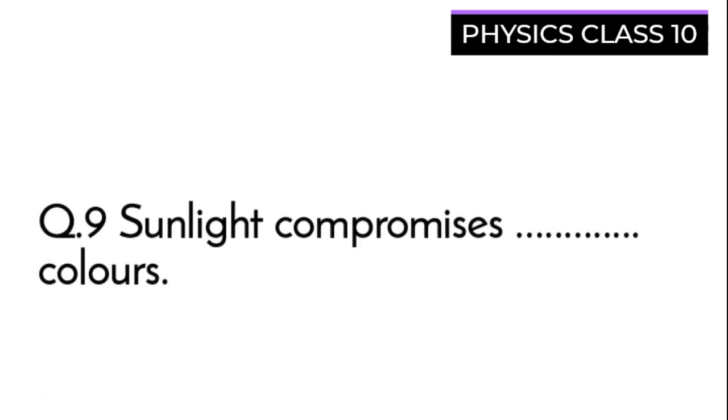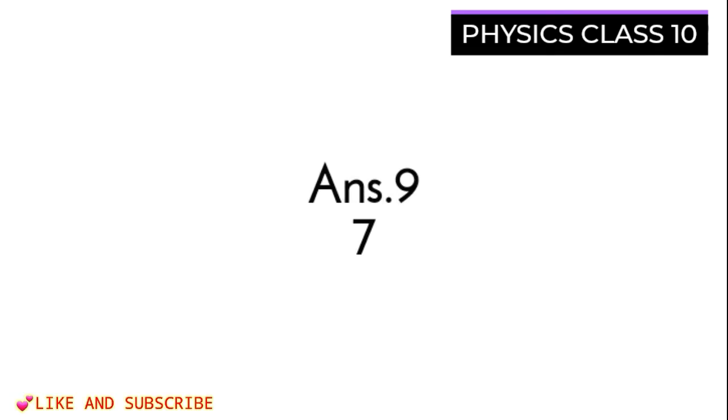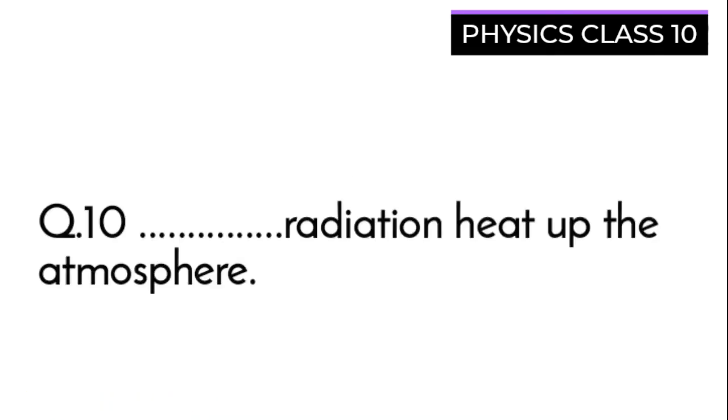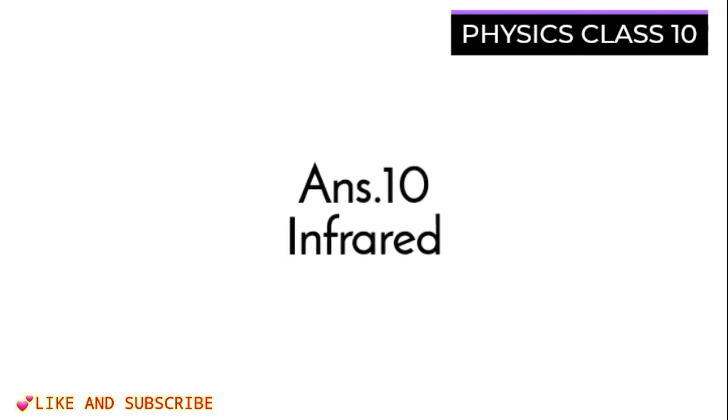Now question nine: Sunlight comprises dash colors and I think you all know that it is made up of seven colors. Question ten: Dash radiation heats up the atmosphere. Name the radiation which heats up the atmosphere and its answer is infrared.